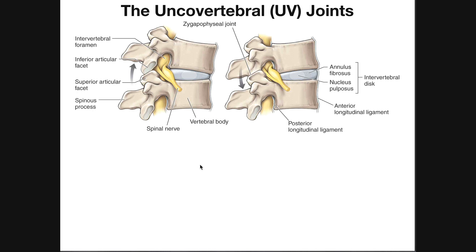The lower cervical spine is actually longer than the upper cervical spine. This uncovertebral joint is something we're only going to see in the lower cervical spine — not in the thoracic, lumbar, or upper cervical spine. Before we get into what the uncovertebral joint is and its significance, let's do a brief review of some major structures in the vertebrae.